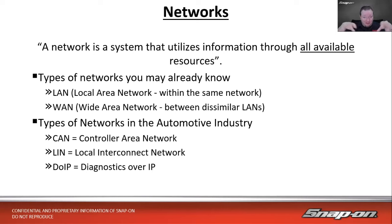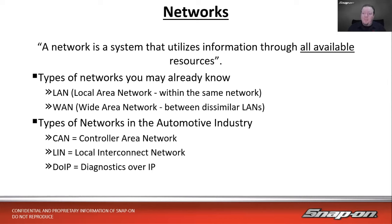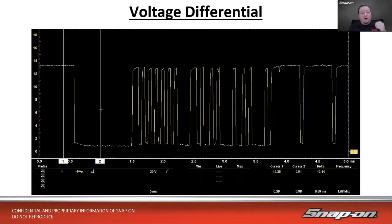There's also WAN — wide area network — which is multiple LANs connected together, essentially the internet. In the automotive industry, we deal with CAN, which stands for controller area network (not car area network), used in automobiles and factories. We also have LIN — local interconnect network — a single-wire point-to-point bus, and DoIP — diagnostics over IP — which is ethernet-based and showing up in some vehicles.